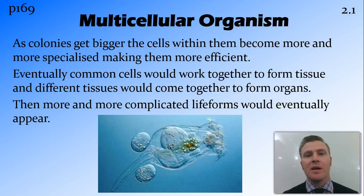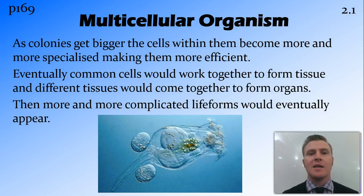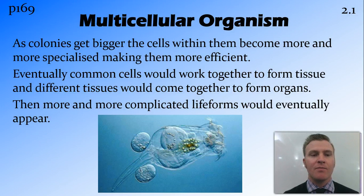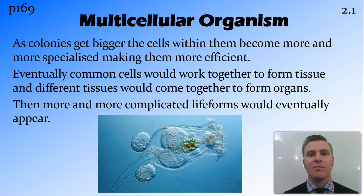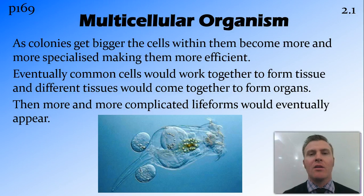As colonies get bigger and bigger, the cells within them become more specialised, taking on roles of their own, which makes them more efficient. There might be one cell whose role is to protect the other cells on the outside, and another whose role is to get energy from the environment and deliver it to other cells. Eventually these specialised cells form together into tissues, which then form into very early and simple organs, and through the process of evolution, these multicellular organisms would eventually produce more and more complicated life forms.